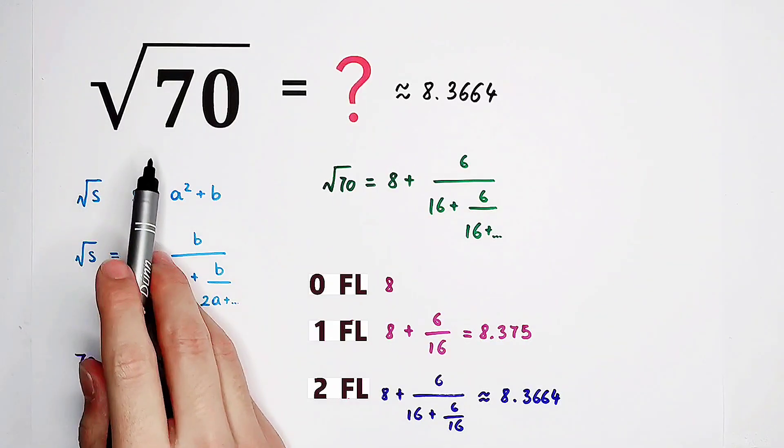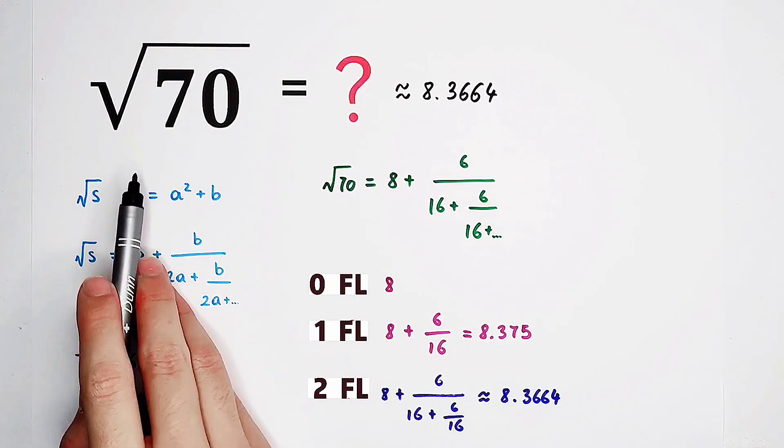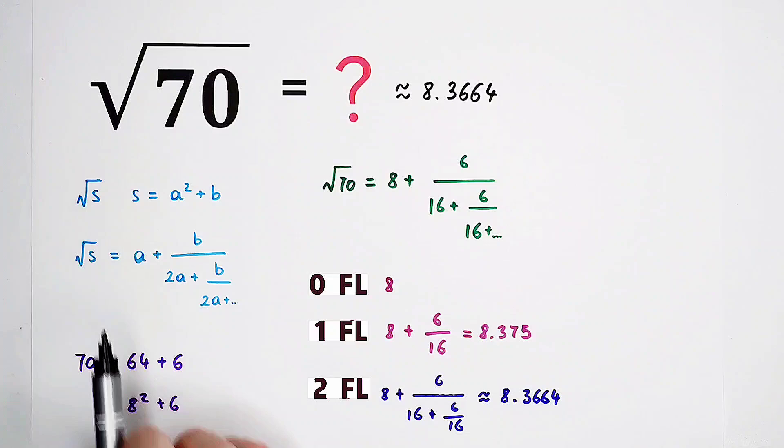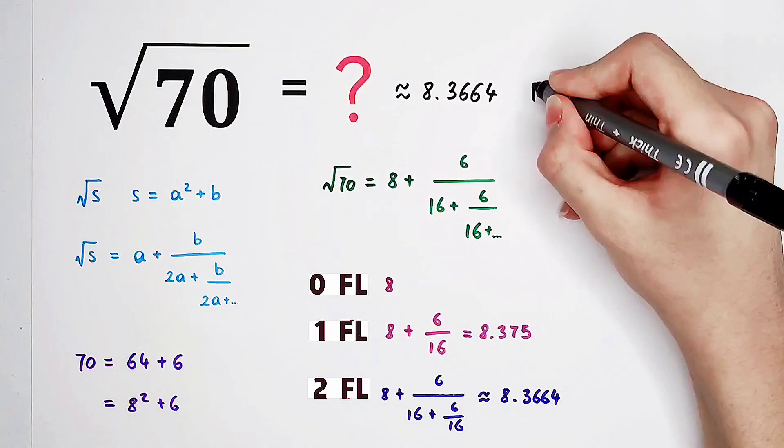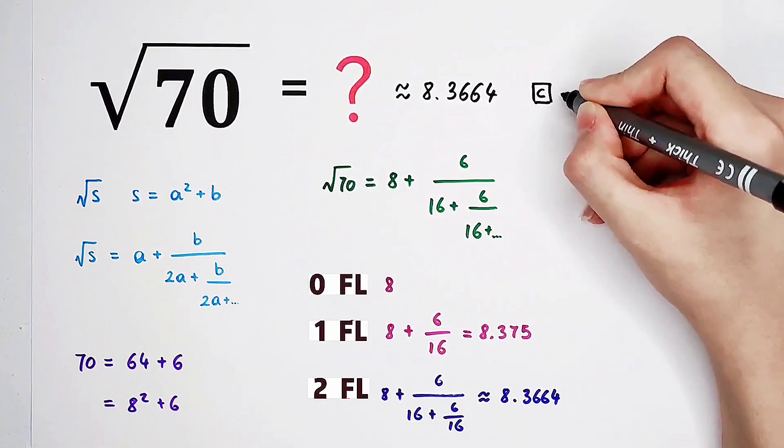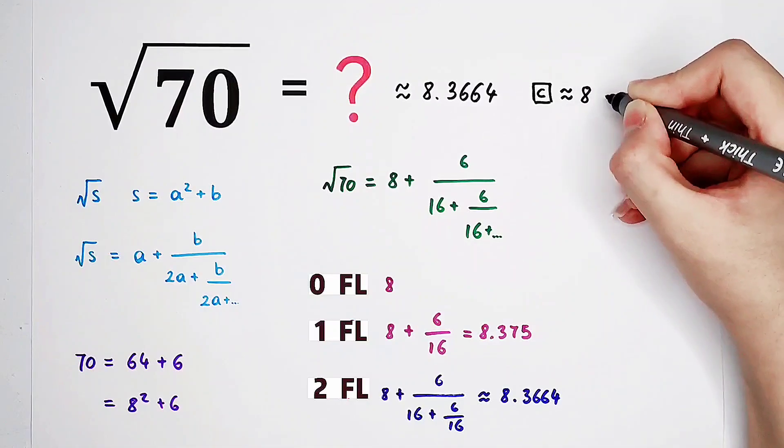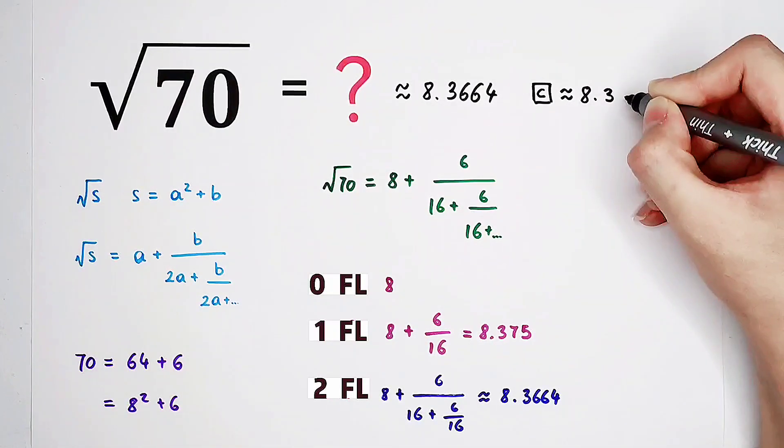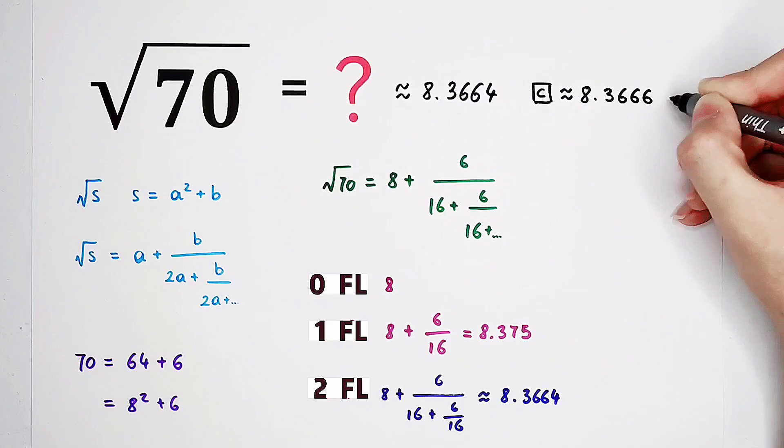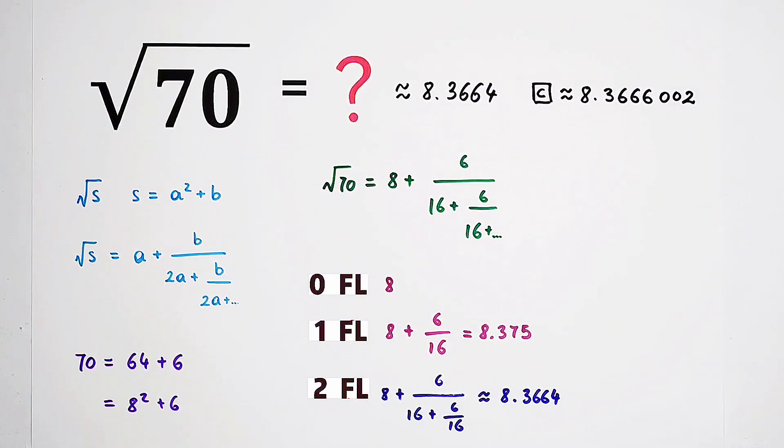Now, if you press square root of 70 on the calculator, then it's going to tell you, on the calculator, it's approximately equal to 8.3666002. So now you can see that our approximation was really great.